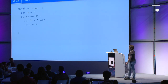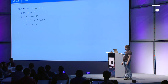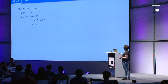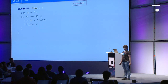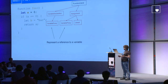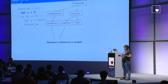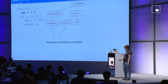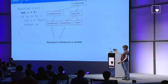Let's look at some simple source code and what the parser does with it. The parser constructs an AST — an abstract syntax tree — that describes the structure of the source code. For the function, there is a function literal. Then there is a variable declaration and an assignment. Every time we see a variable name, we create a variable proxy object for it. We don't yet know what variable that is — it just represents a reference to a variable. And the zero is a literal.